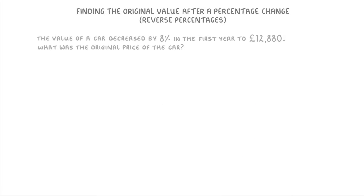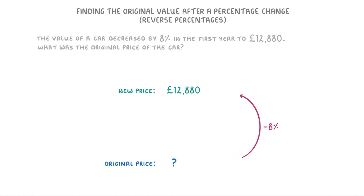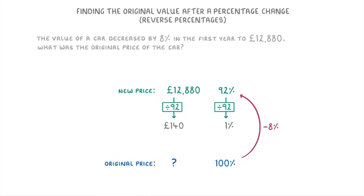For this one, the value of a car decreased by 8% in the first year to £12,880. What was the original price of the car? Well, £12,880 is the new price, and we know it decreased by 8% from the original price, which we can think of as 100%. This means the new price must be 100 minus 8, or 92% of the original. So we divide £12,880 by 92 to find that 1% is £140, and then multiply by 100 to find that the original price was £14,000.